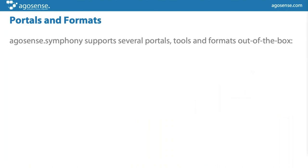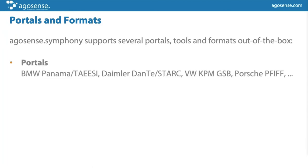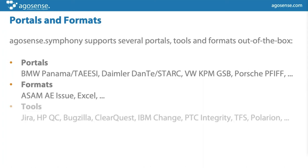As a summary: Symphony supports several portals, tools, and formats right out of the box — BMW systems, Daimler systems, Volkswagen, Porsche — and supports different file formats like the ASAM standard. Some customers also exchange data via Excel tables, which is also possible. For the internal side, we really do not care which tool the supplier is using — we can connect to nearly all tools available for change and defect management.